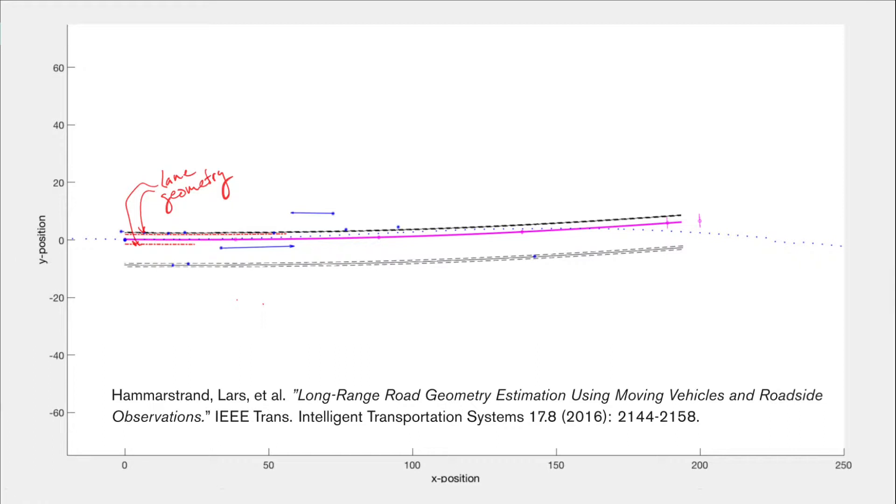From the radar, we mainly get two things. First, we get the relative position and velocity of other vehicles. These are shown here as these blue dots, where the arrow indicates the velocity vector. The second thing that we get is stationary detections from the roadside objects, such as guardrails or barriers, as shown here.